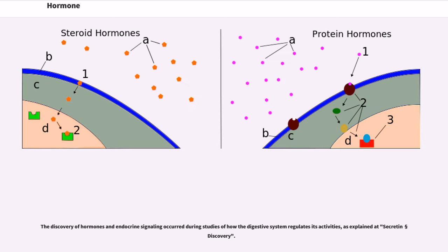The discovery of hormones and endocrine signaling occurred during studies of how the digestive system regulates its activities, as explained at Secretin Section Discovery.